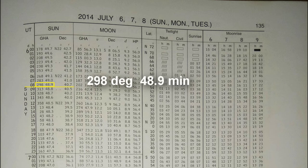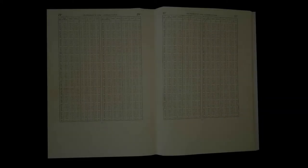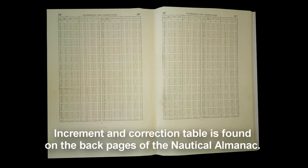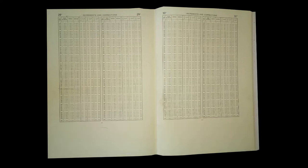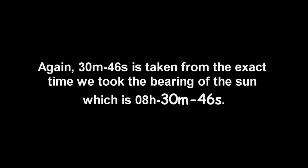This is the value for the GHA of the sun, while this is for the declination. Step 4: Go to the Increment and Correction table and look for the increment value of 30 minutes and 46 seconds. The Increment and Correction table is found on the back pages of the nautical almanac — you can easily locate it because the pages are colored yellow. The 30 minutes and 46 seconds are taken from the exact time we took the bearing of the sun, which is 08 hours, 30 minutes, and 46 seconds.